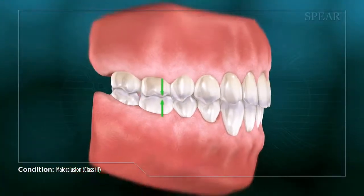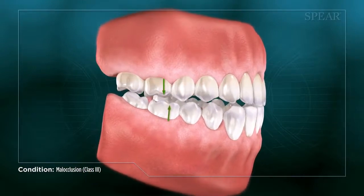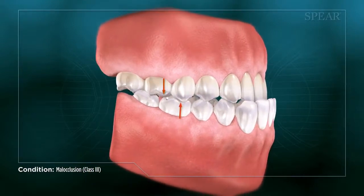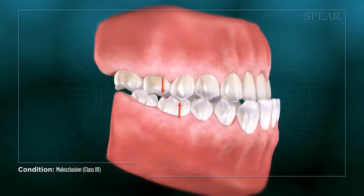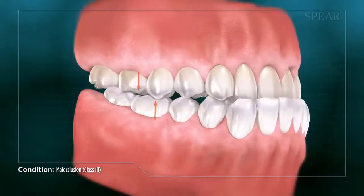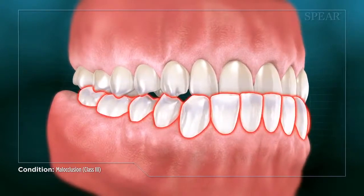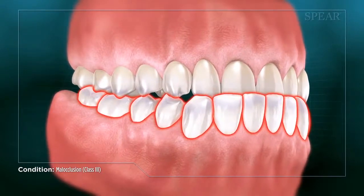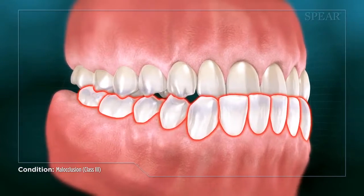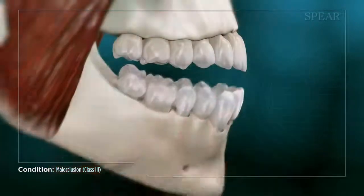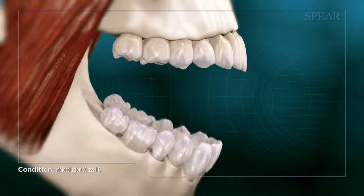In some cases, a patient's upper molars line up behind their lower molars, causing what is commonly called an underbite. This causes the lower jaw to protrude outward, with the lower front teeth sitting out in front of the uppers.